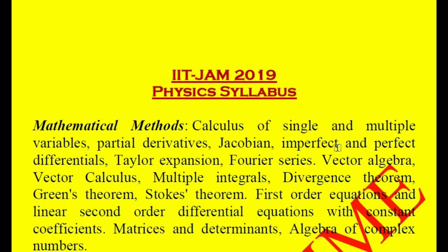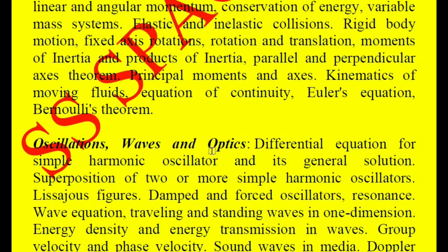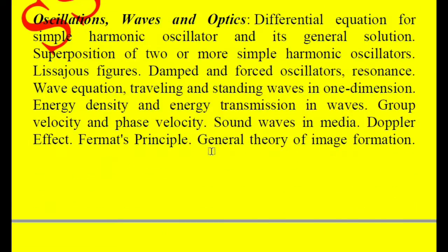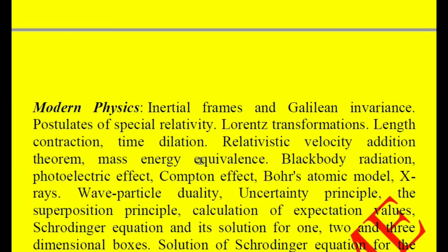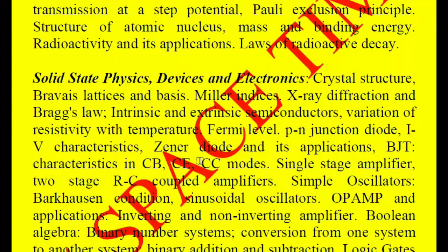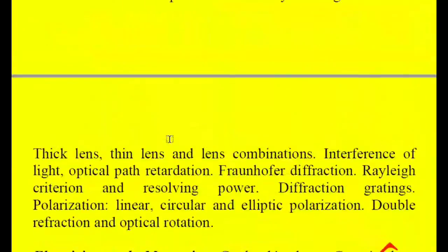Today we will analyze the physics syllabus of IIT JAM 2019. It is basically divided into seven sections: mathematical methods, mechanics and general properties of matter, oscillations waves and optics, electricity and magnetism, kinetic theory and thermodynamics, modern physics, and the seventh one is solid state physics, devices and electronics. We will analyze the whole syllabus one by one.